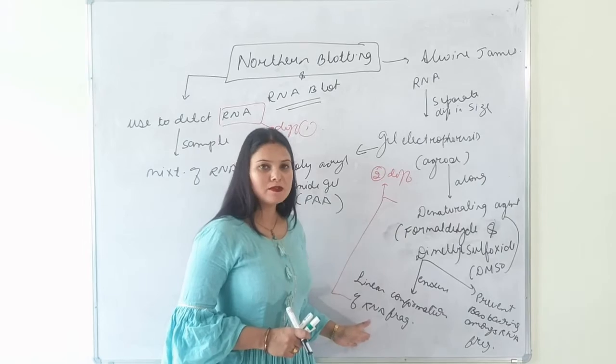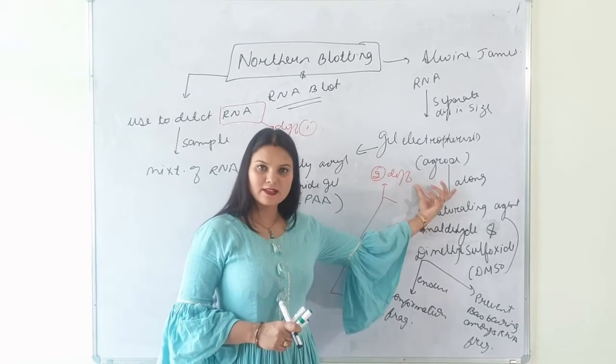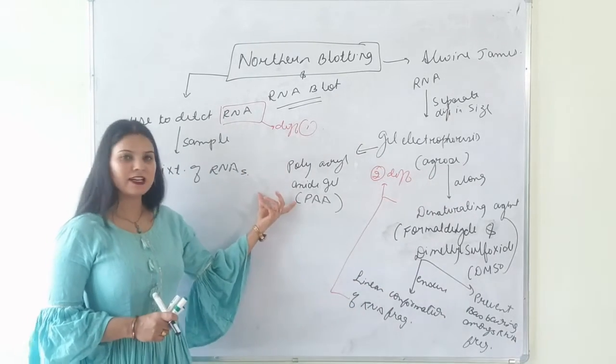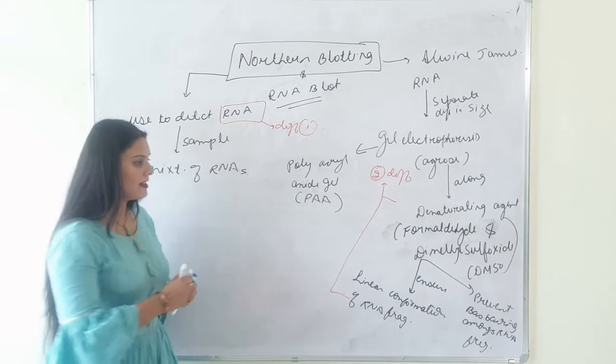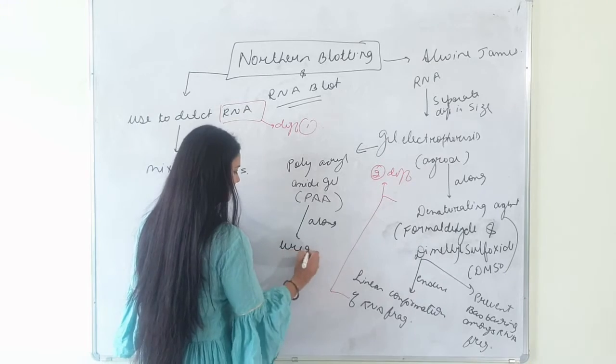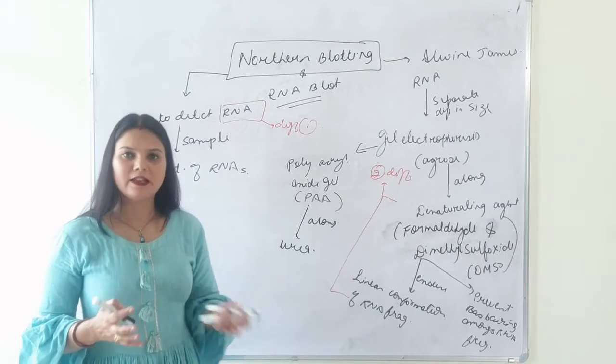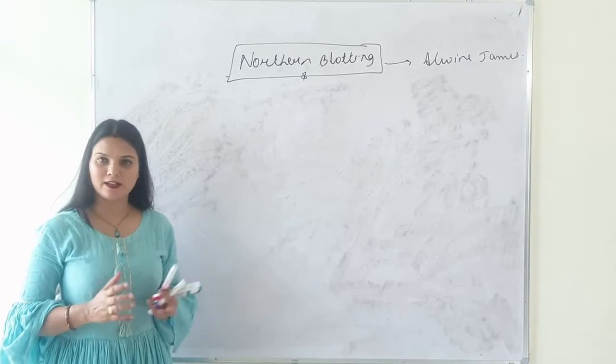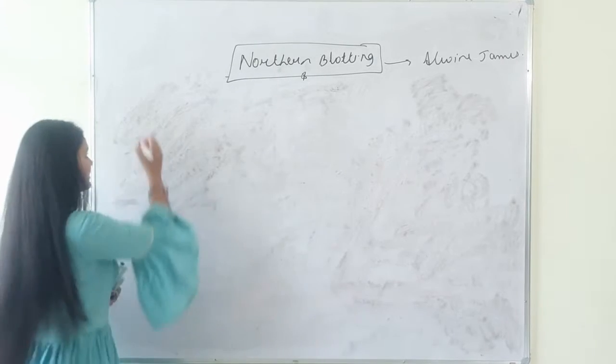This happens when we use agarose as a gel. And when we are taking PAA as a gel, then we use it along with urea as a denaturation agent. After gel electrophoresis the next step is blotting.